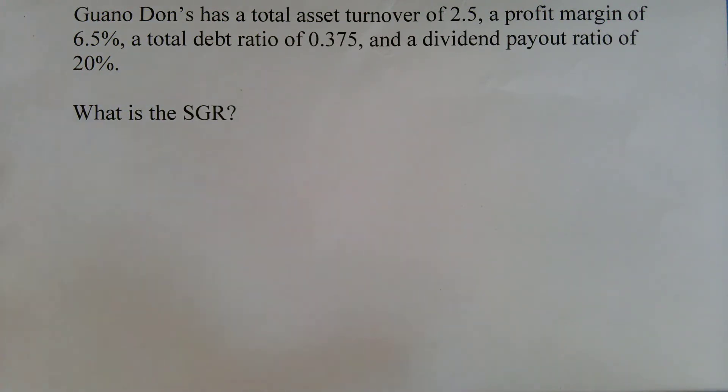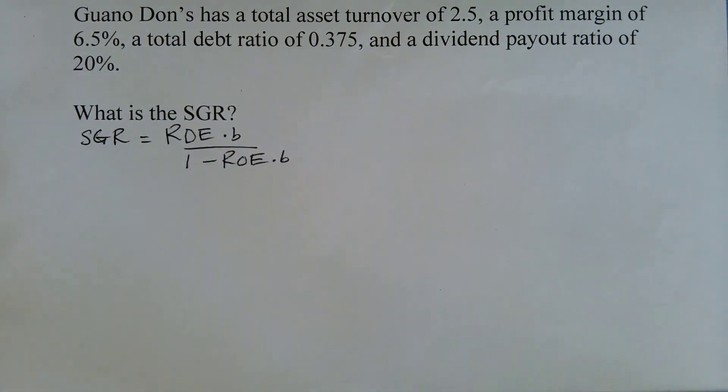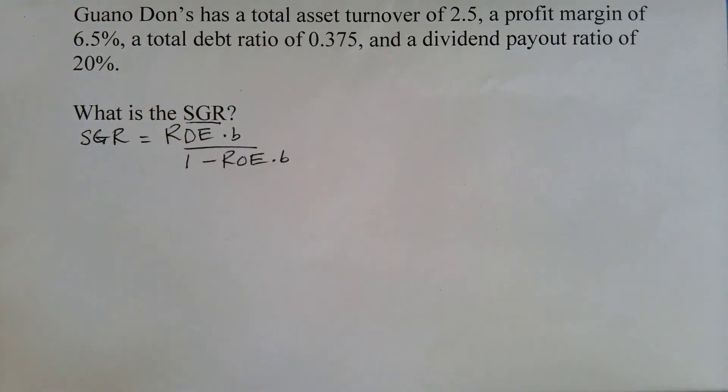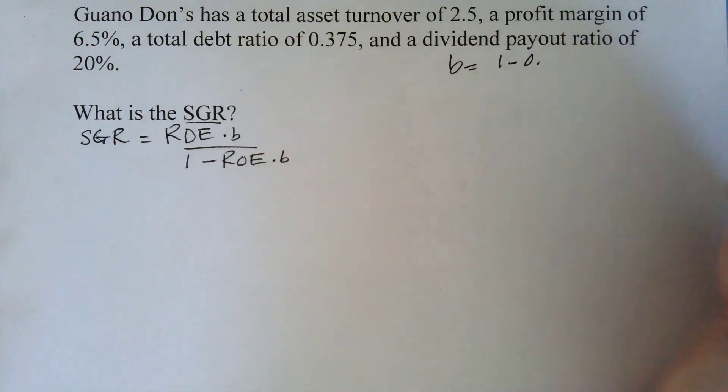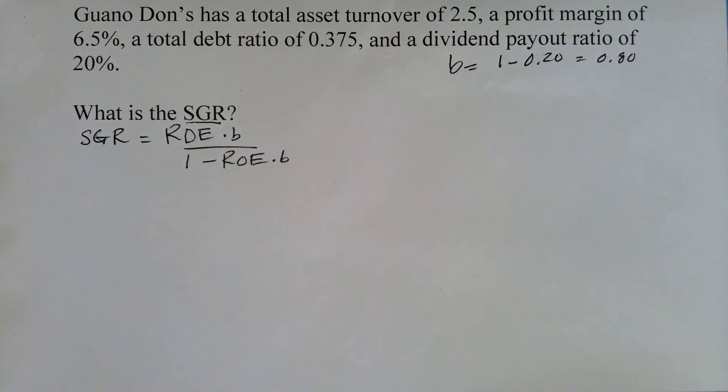And so the sustainable growth rate, if there's any debt in the capital structure at all, is going to be higher than the internal growth rate. What is the formula for SGR? You may recognize this formula from previously. It looks just like the formula for IGR, only instead of ROA, we're doing ROE. And so let's go back through and see about the information that we have and what we need, because we always start with this question. What are we looking for? Well, we already know that B is 1 minus 0.20 is 0.8. That hasn't changed any.